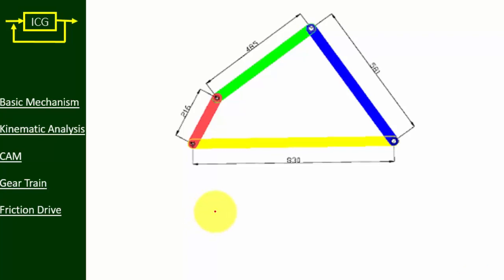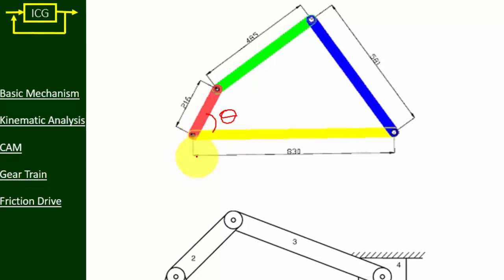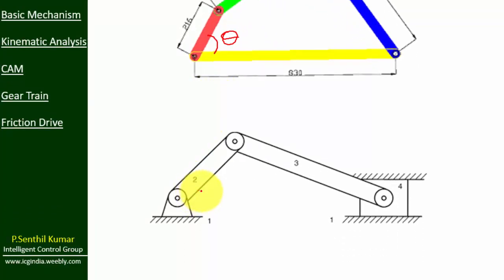Consider the four-bar mechanism — its degree of freedom is one, represented by theta. If you know the crank angle, you can easily find the position of all four links because the link lengths are constant. Similarly, the degree of freedom of the slider-crank mechanism is also one: knowing the crank angle lets you find the position of the connecting rod, slider, and fixed link.